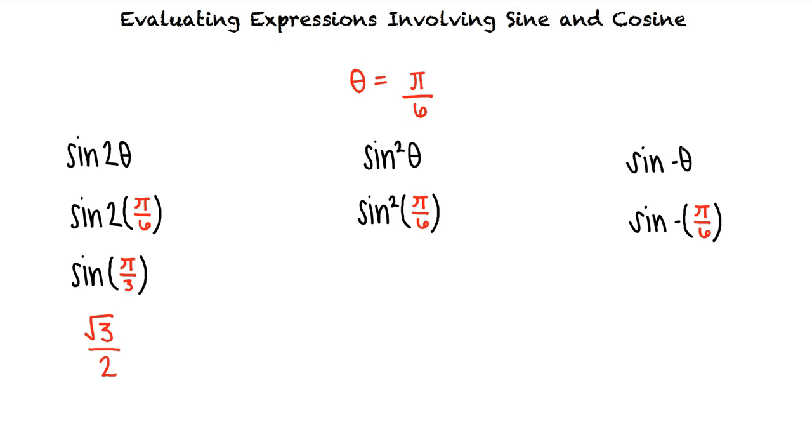Let's move on to the second expression. The sine of π/6 is 1/2. So our final answer will be 1/2 squared, which is 1/4.